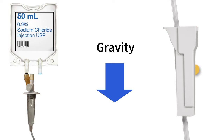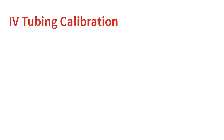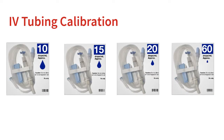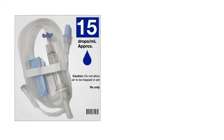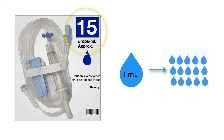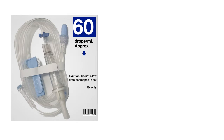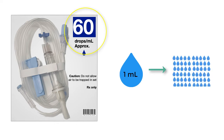Let's now consider the mathematics and calculations involved in these gravity infusion situations. First, it is very important for the nurse to consider the specific tubing calibration that is available, since there are multiple varieties, each impacting the size of the drop that falls into the drip chamber. For example, consider the tubing on the screen. The packaging notes that this tubing has a drop factor, or calibration, of 15 drops per mL. This means that for every milliliter in the IV bag, this tubing will break that milliliter into 15 drops. This IV tubing has a drop factor of 60 drops per mL, meaning that each milliliter of fluid will be broken into 60 drops. As you might notice, these drops are much smaller compared to those with the 15 drop per mL tubing, since each milliliter is being broken into more drops.